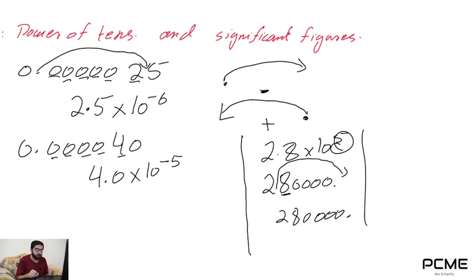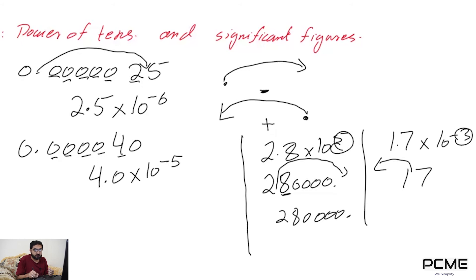One more example: what if the power is negative? For instance, 1.7 times 10 to the power of negative 3. The decimal point jumps 3 digits to the left, so it becomes 0.0017.